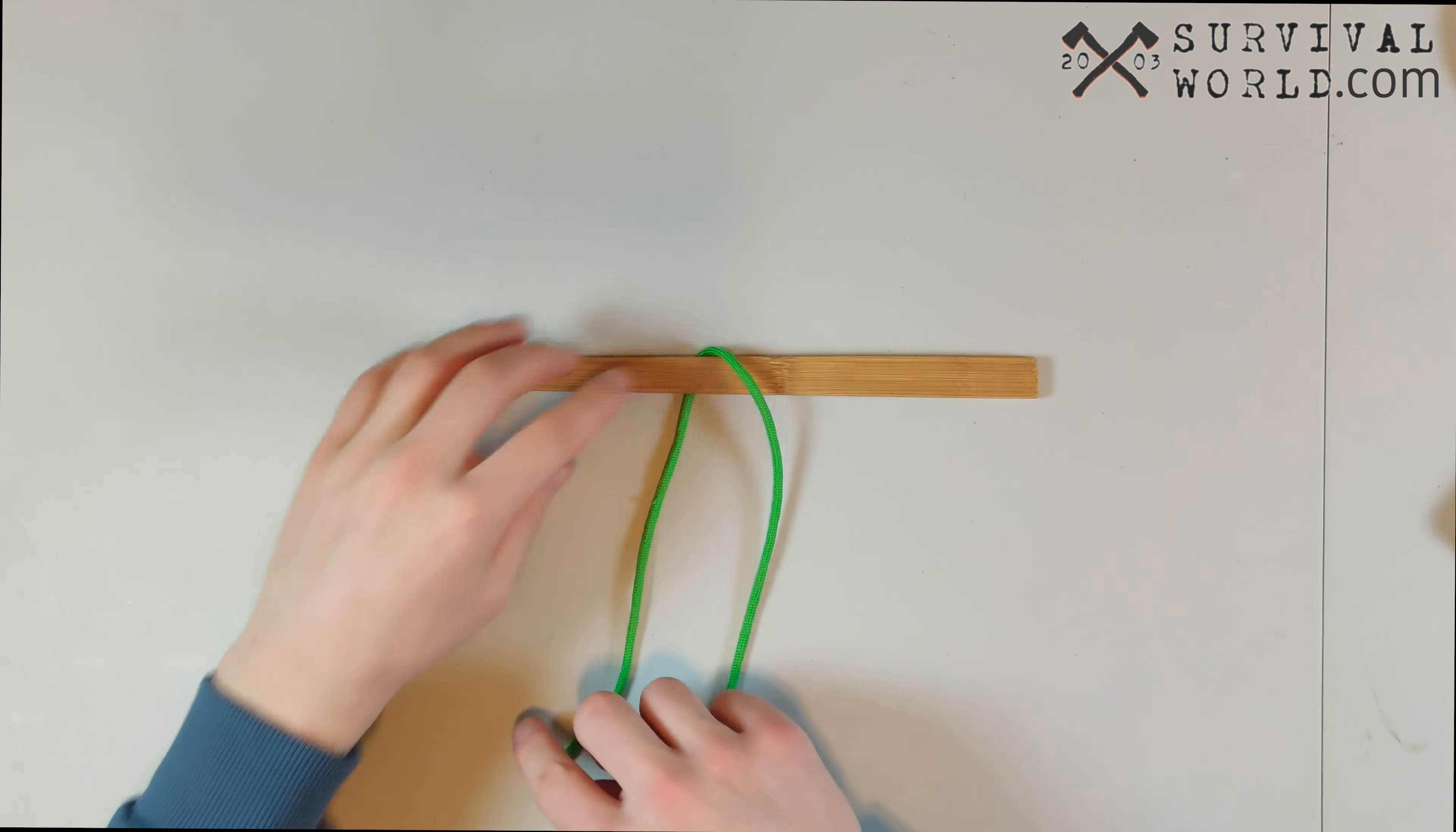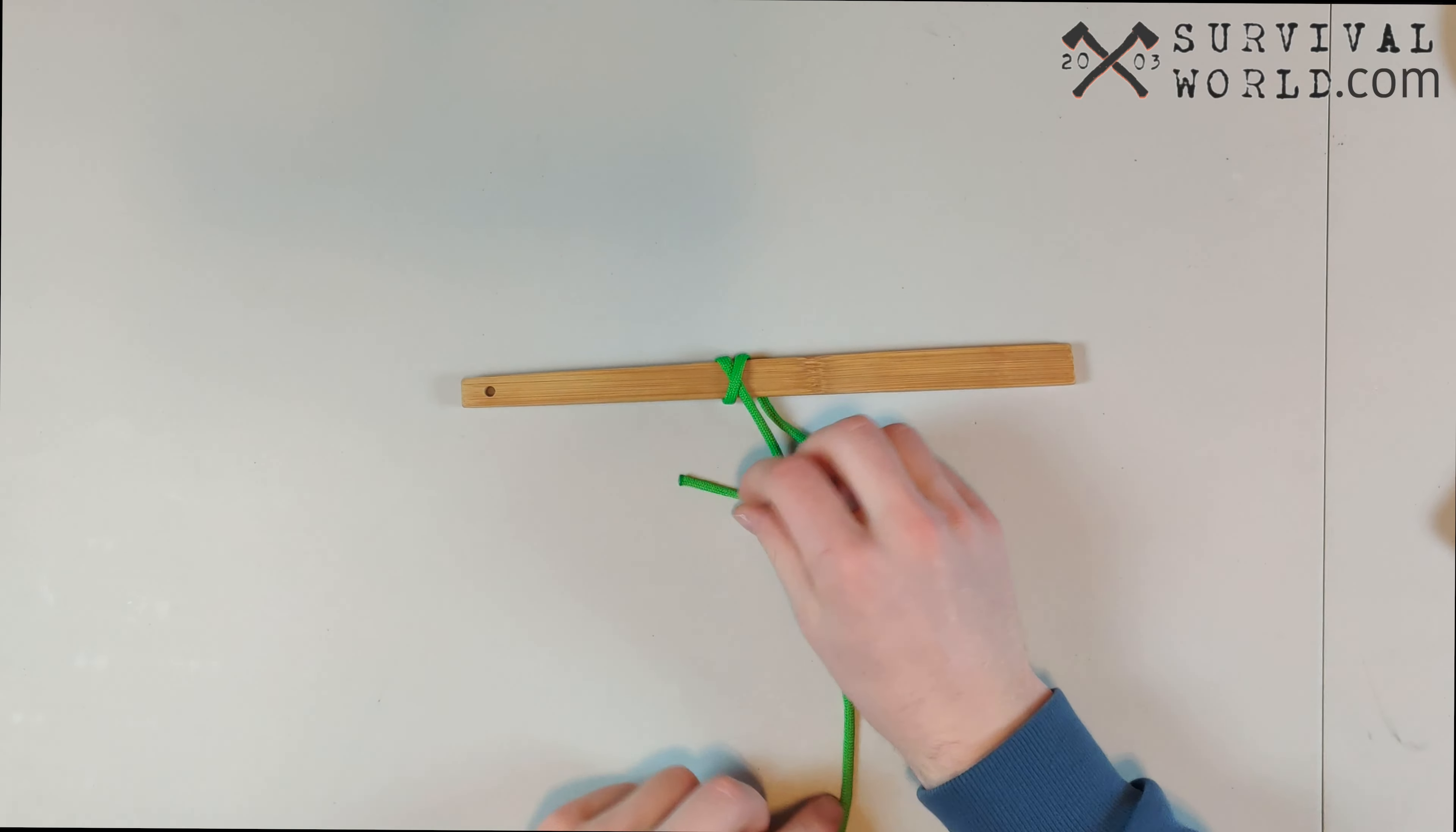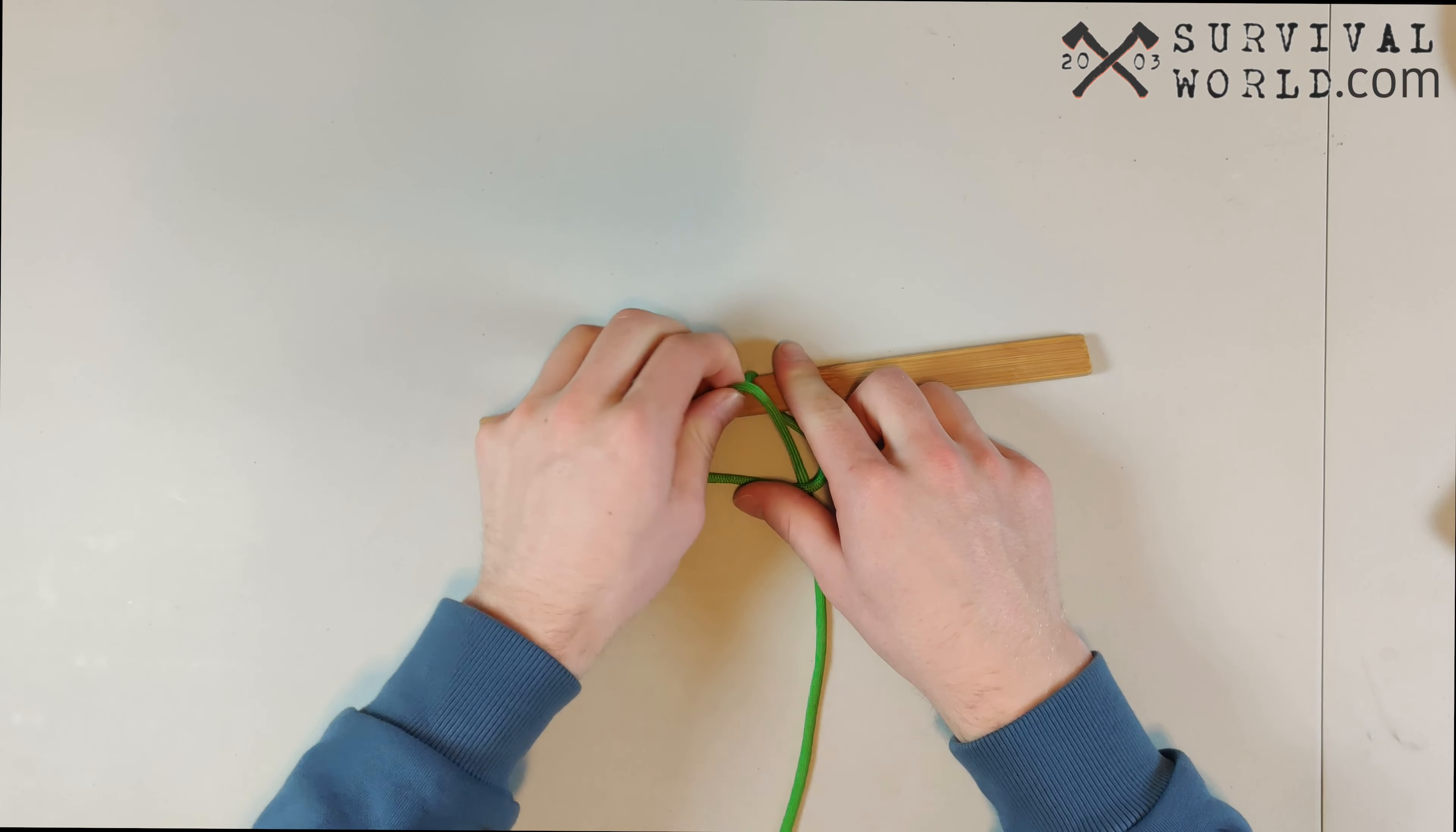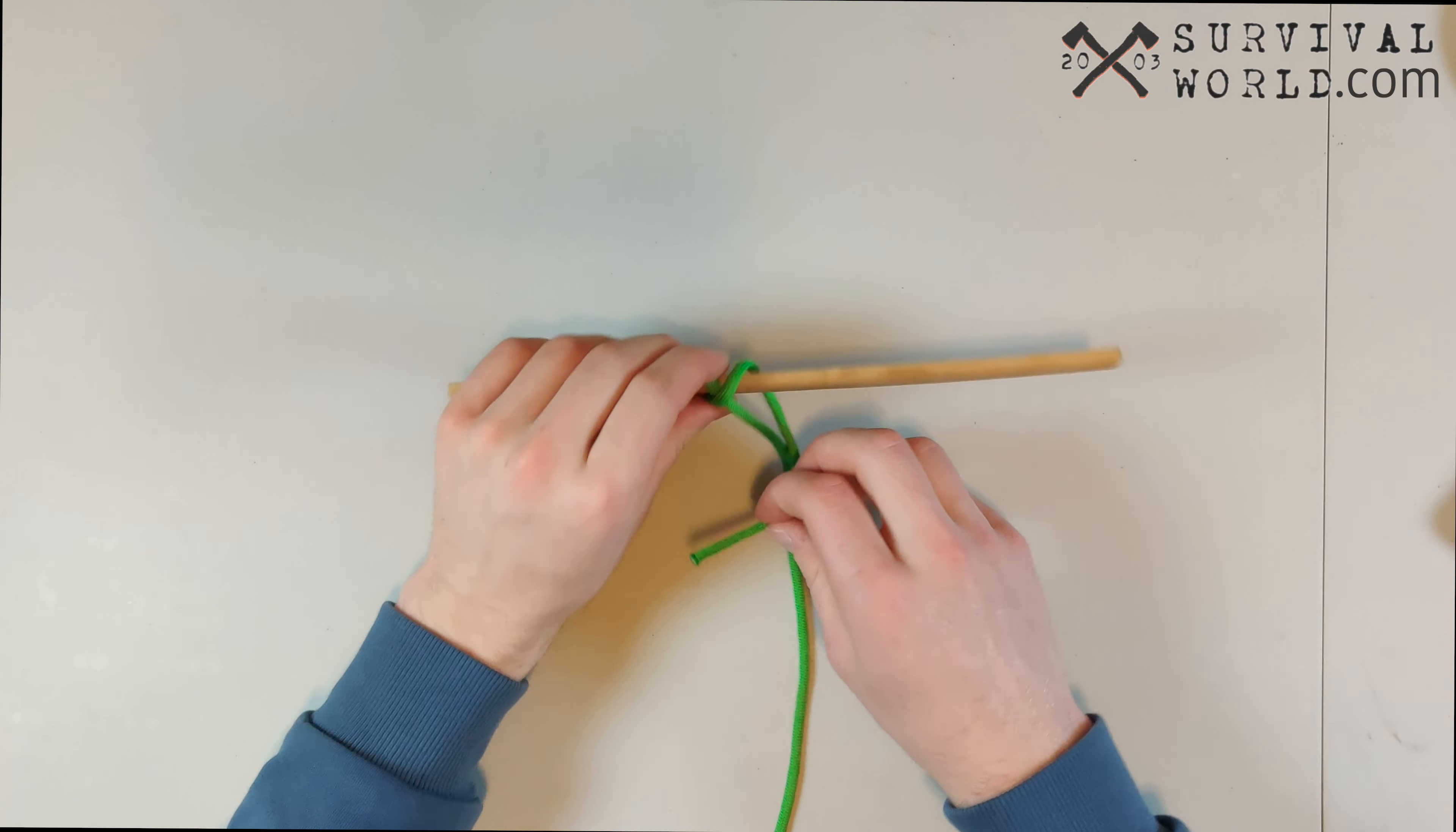We're going to start off by just wrapping a rope around whatever we're trying to fasten this knot to and wrap it around and we're going to put our end to the left here. Now with the end to the left, we're just going to put it up and over to the right like this and we're going to wrap it around our object again and come down with it.